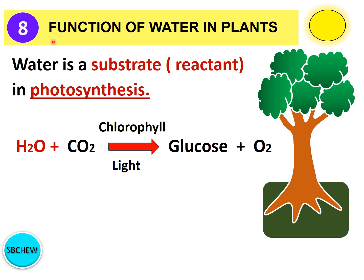An important function of water in plants is that it is a substrate or reactant used in photosynthesis. The equation shows that water and carbon dioxide react together in the presence of chlorophyll and sunlight to form glucose and oxygen. Water is absorbed by the roots and transported to the leaves for photosynthesis; without water there is no photosynthesis and the plant cannot produce organic food substances.